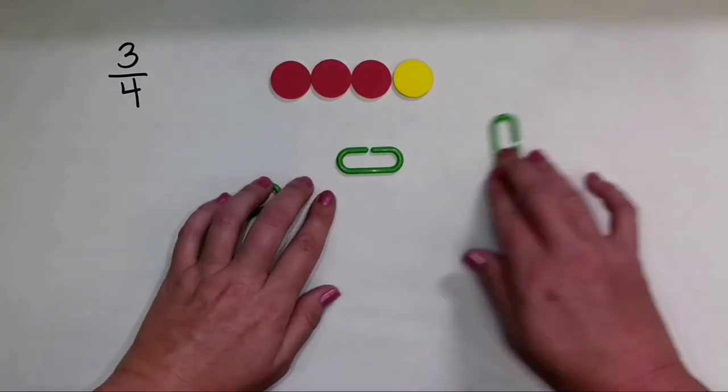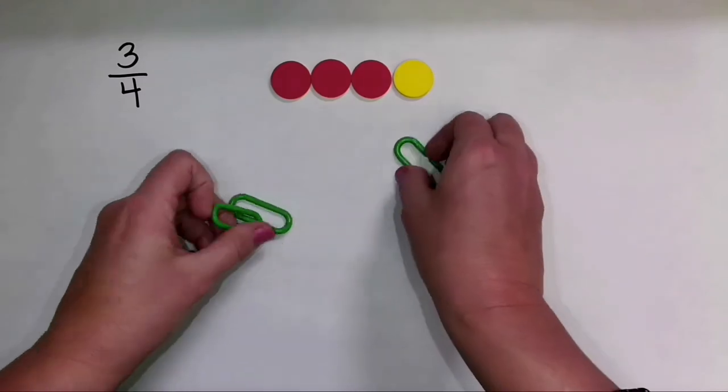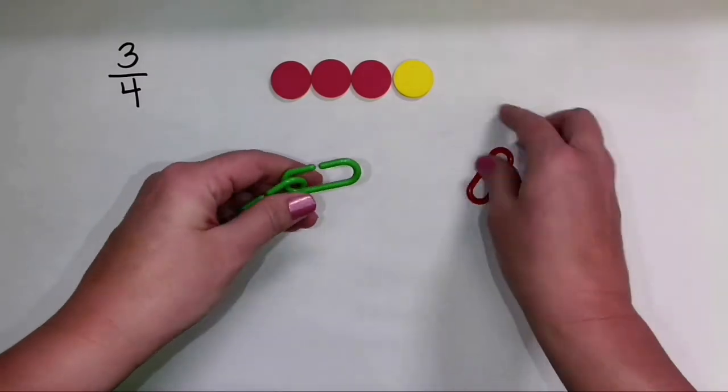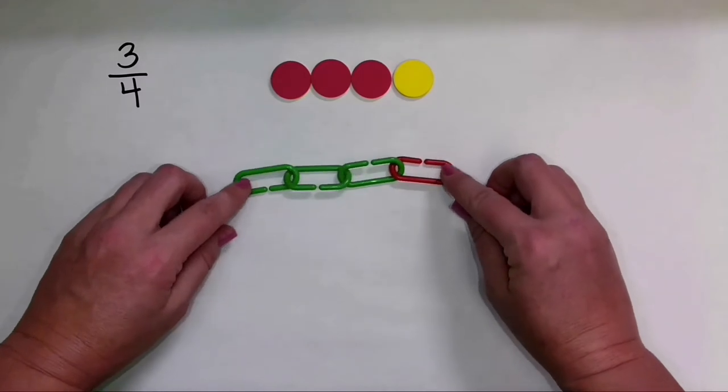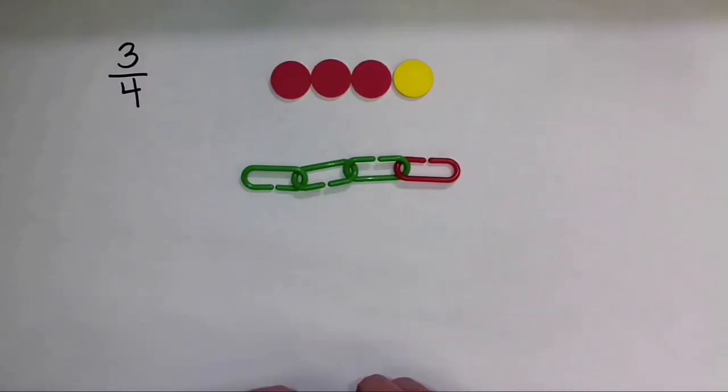We also have manipulatives like this. These are some nice little plastic clips. And here you can actually clip them together to show the set. And with this part, I have three green clips and one red clip. So 3/4 of the clips are green.